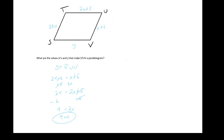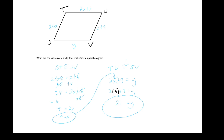Now that we have x, we know TU is congruent to SV, meaning 2x plus 3 equals y. Plugging in x equals 9: 2 times 9 is 18, plus 3 is 21. So y equals 21. Our two values are x equals 9 and y equals 21.